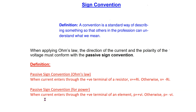Similarly, passive sign convention applied to power calculations states: when the conventional current enters through the positive terminal of a circuit element, the power P is plus V times I; otherwise the power is minus V times I.